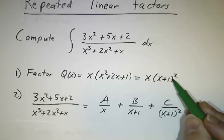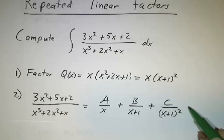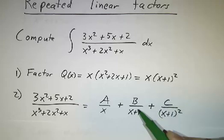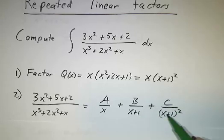If we had 3 powers of x plus 1, we would have had a plus D over x plus 1 cubed. However many powers of x plus 1 you have, that's how many terms you have with x plus 1's in the denominator.